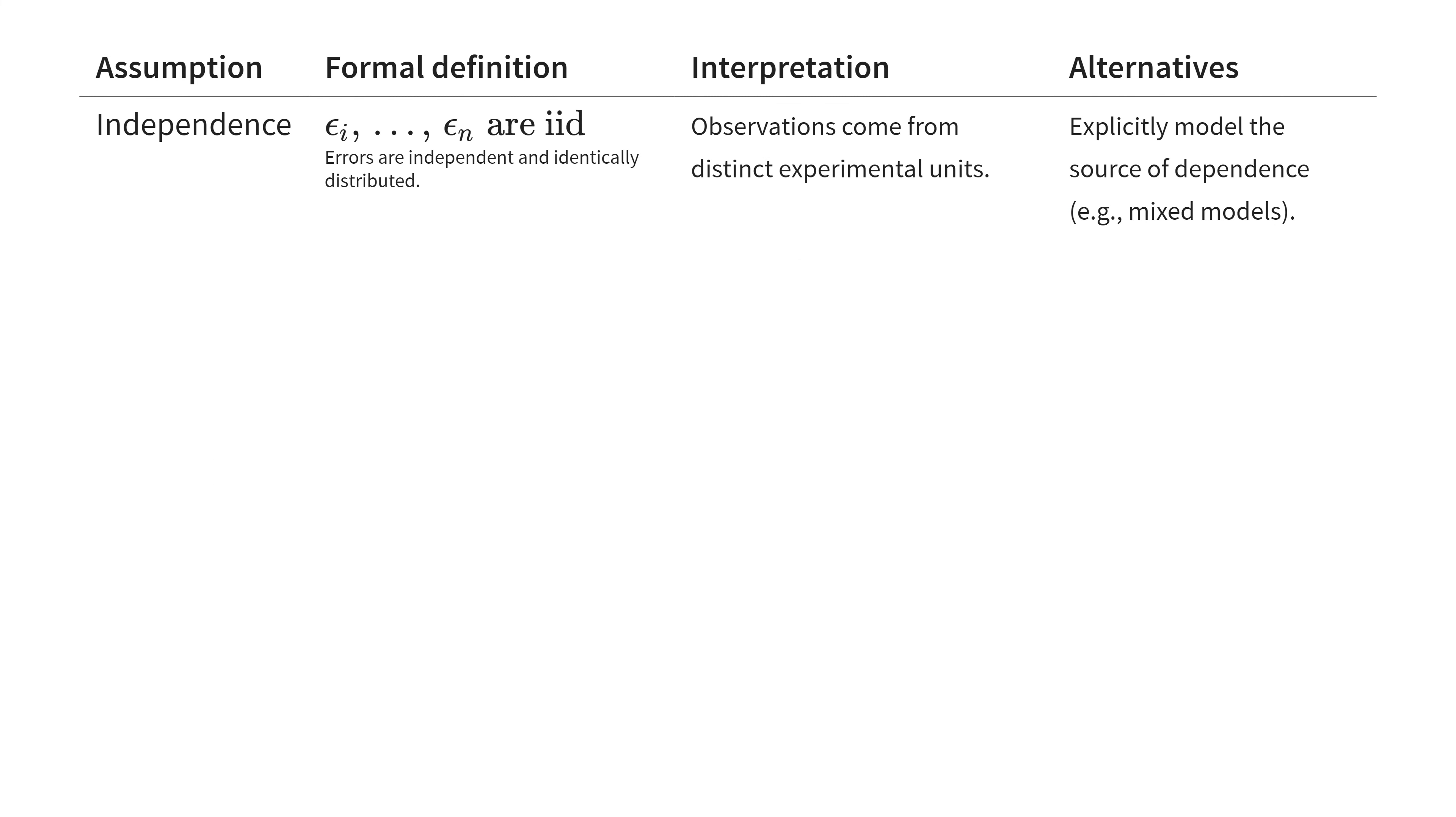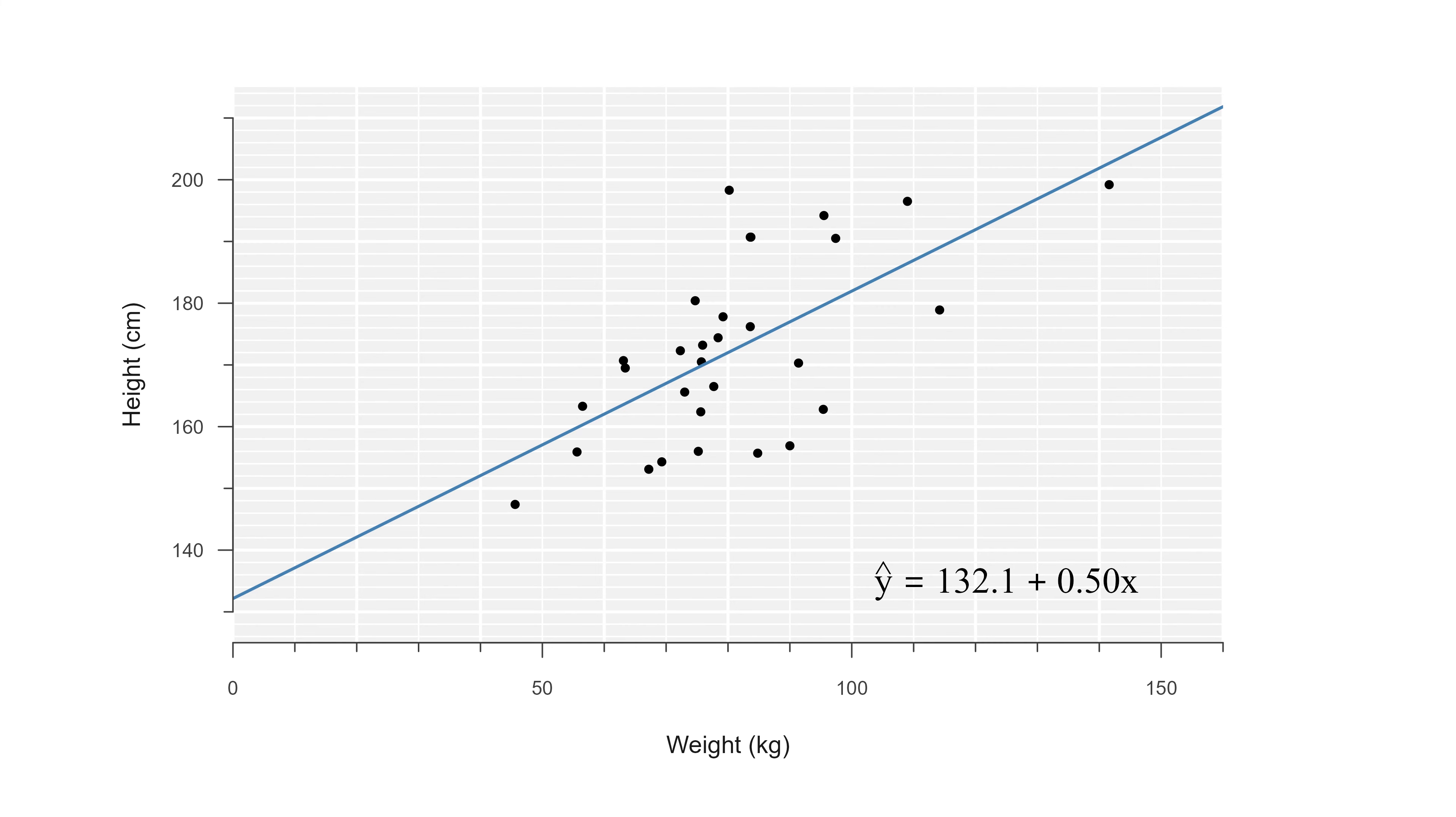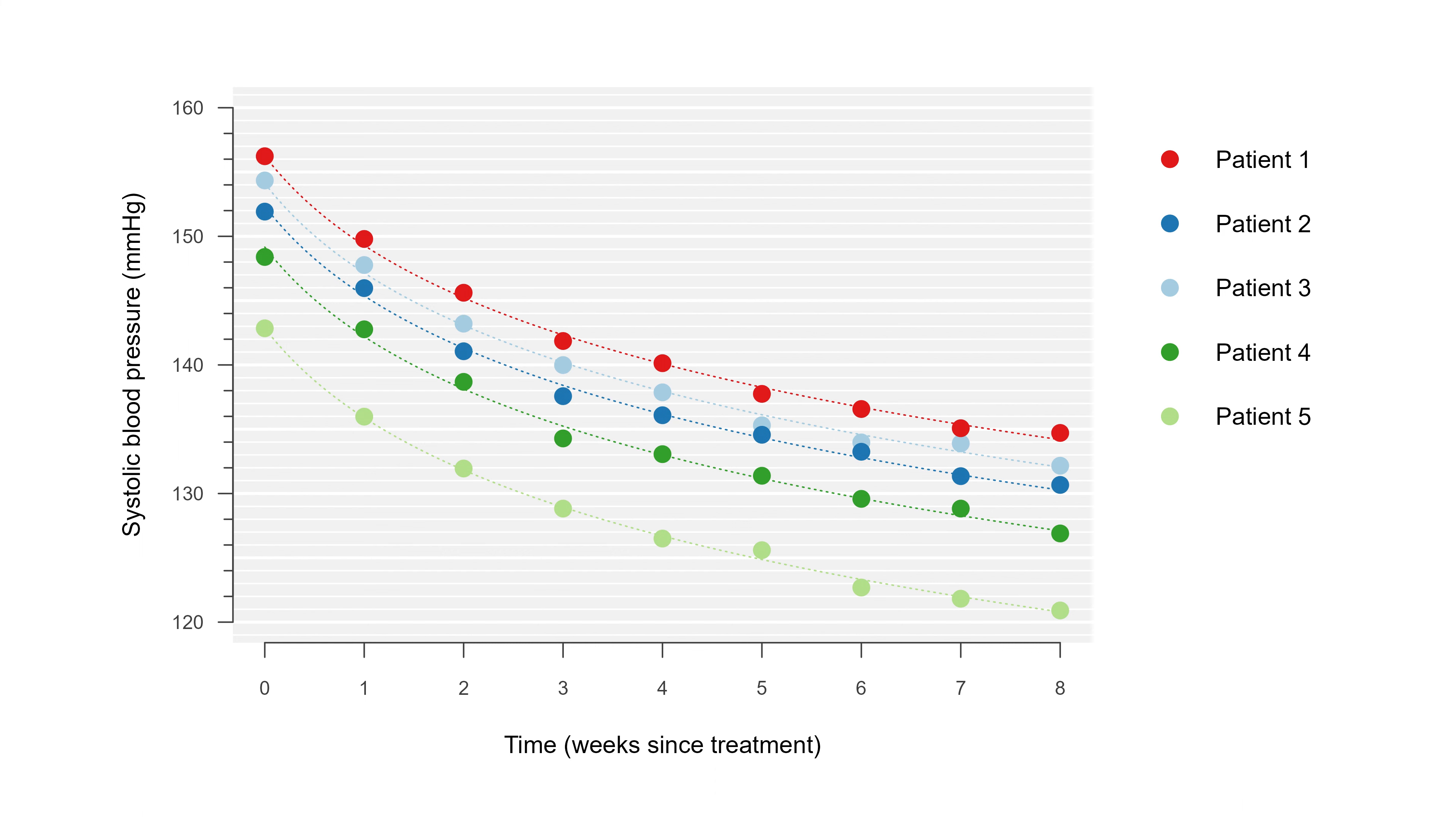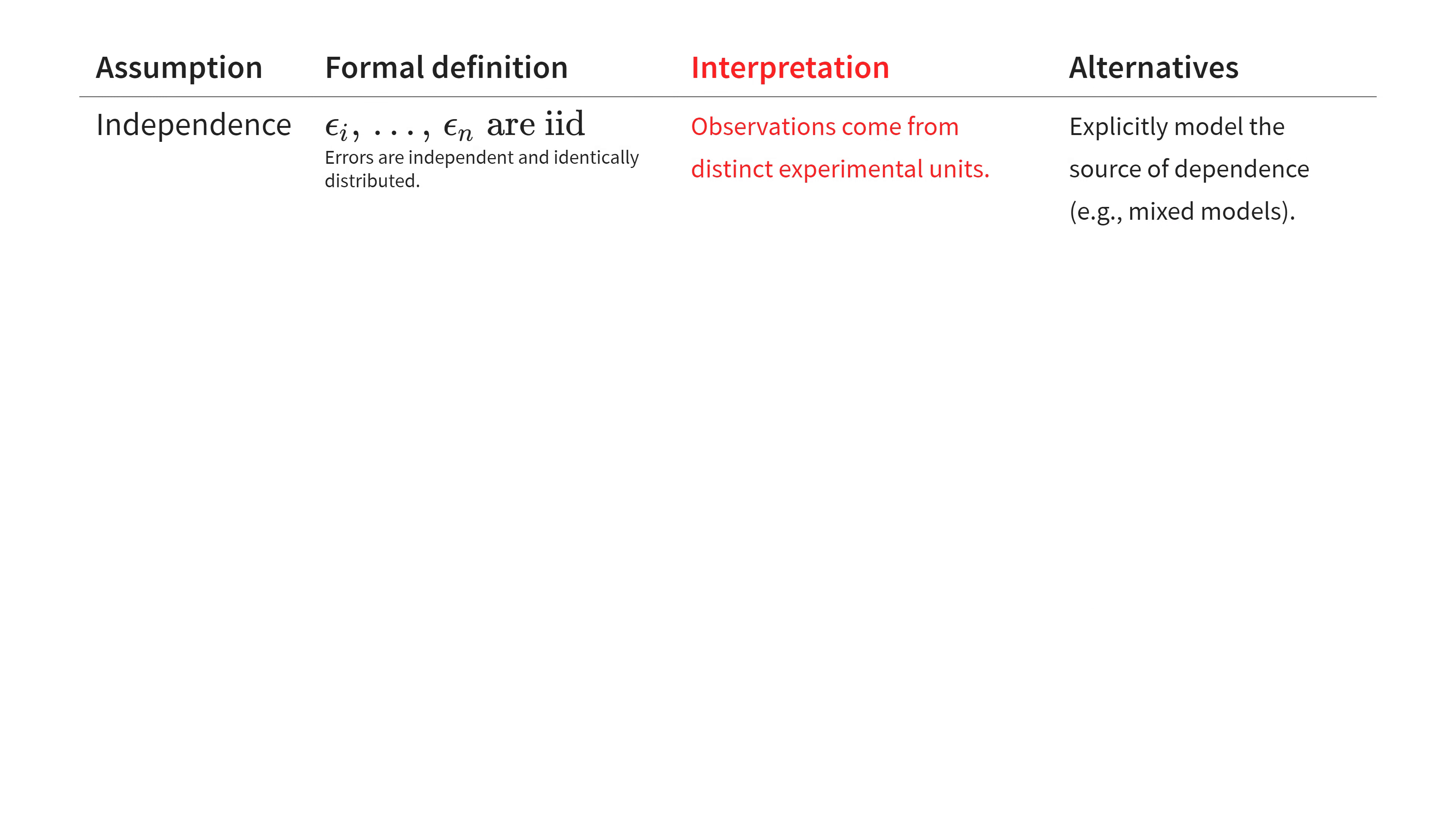Independent measurements means that we have observations from distinct experimental units, like in our example where we measured height and weight of 30 different individuals. In some cases you want to measure the same individuals multiple times, like before and after some treatment, or to see the progression over time. There's nothing fundamentally wrong with a study design like this, but if you measure the same individuals multiple times, you cannot consider the measurements to be independent, so you have to resort to other methods, like mixed models.